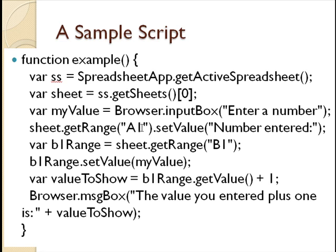Then we set cell A1 to be this string, number entered, right? So this setValue command sets the cell A1 to be this string, number entered. Then what we want to do is take the value the user entered and write that value into cell B1. And so to do that, you define a variable. I called it B1Range, or they called it B1Range. And it's supposed to be set to the range B1. And then we set that variable, which is that range, to be the value that the user entered, the myValue variable. So this sequence of command asks a user to enter a number, takes that number, writes it into cell B1, and then writes the string, number entered, into cell A1.